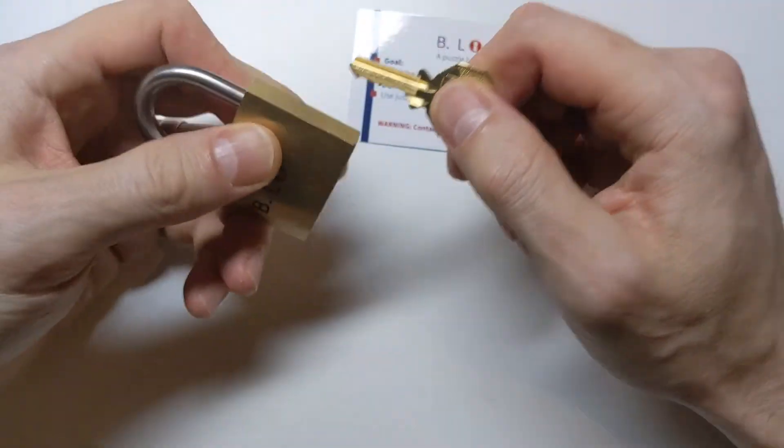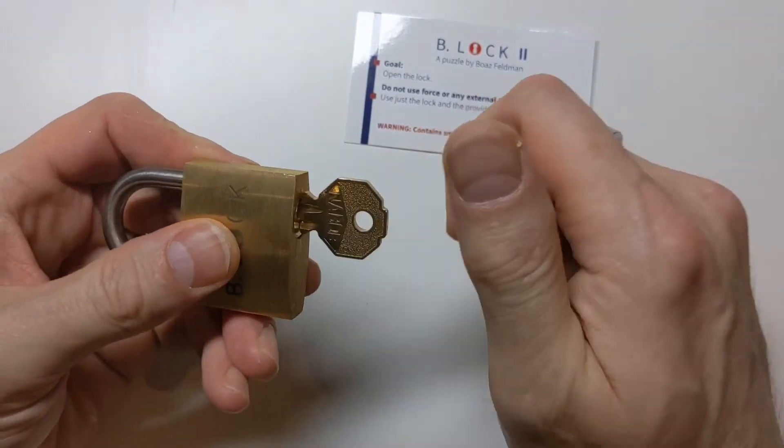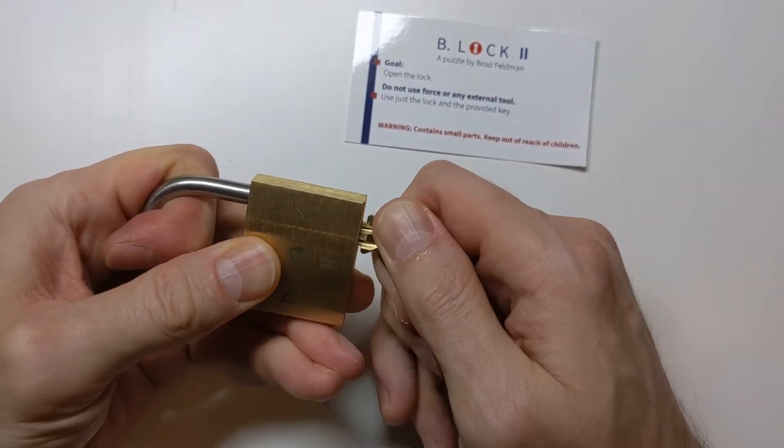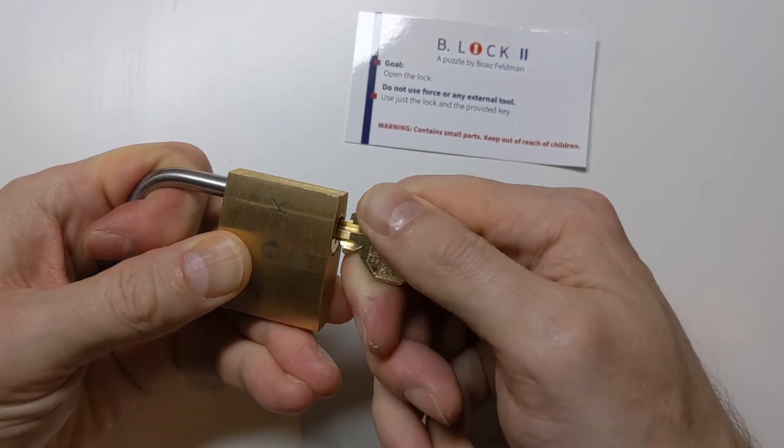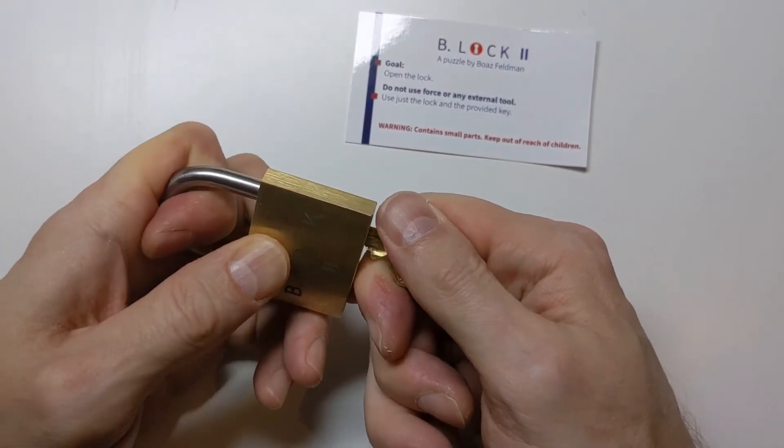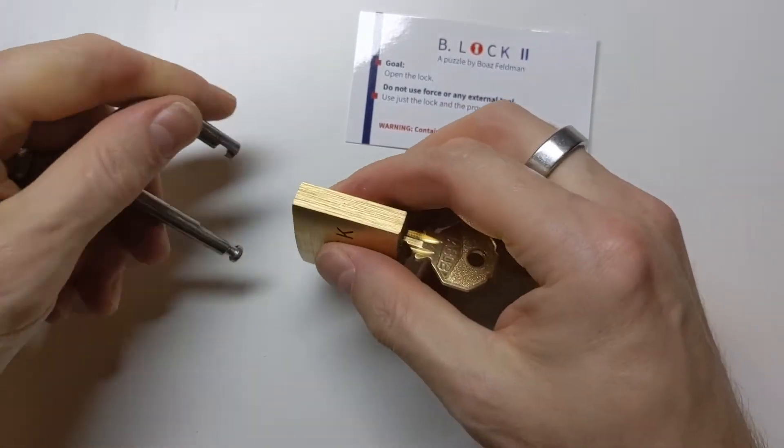I'm going to do it one more time and then I'll be satisfied. So key in all the way. Pull the shackle out, pull the key out slightly. There, I can feel it's caught now. And then I push in on the shackle, key turns and it's open.